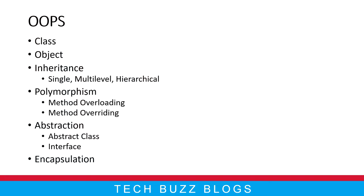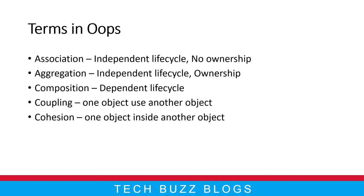We also have encapsulation. These are all different concepts which we are going to learn in future tutorials. Before going to the next video, you need to understand a couple of key terms in OOP. As you can see here: association, aggregation, composition, coupling, and cohesion — these are different terms which we will use in OOP.